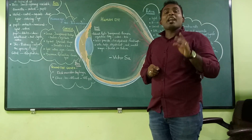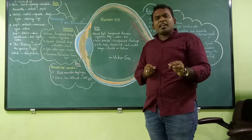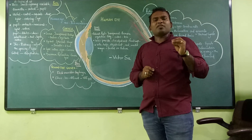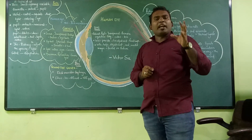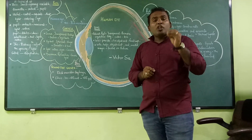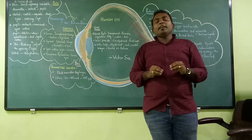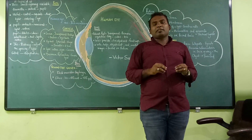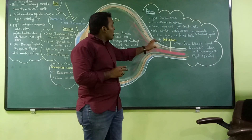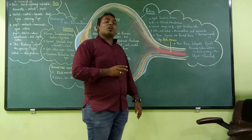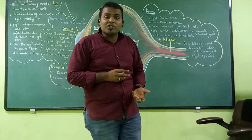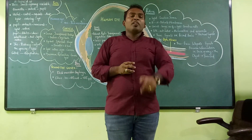The retina is a light-sensitive screen which contains a large number of light-sensitive cells. As soon as light falls on the retina, these cells are illuminated and produce electrical signals. These electrical signals are sent to the brain through the optic nerve, and the brain interprets the signals so that you perceive the object.